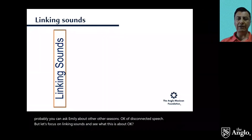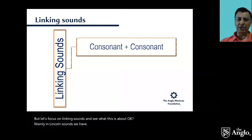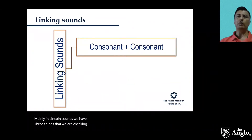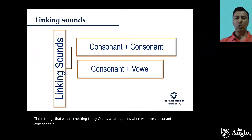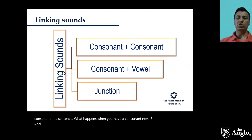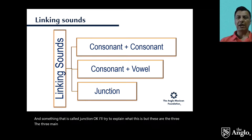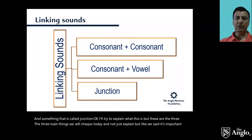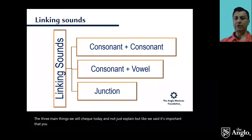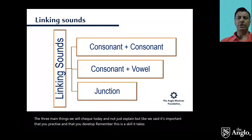In linking sounds, we are checking three things today: what happens when we have consonant plus consonant in a sentence, what happens with a consonant plus vowel, and something called juncture. It's important that you not only understand these but also practice — remember, this is a skill. It takes a little bit of time, but eventually you can improve it.